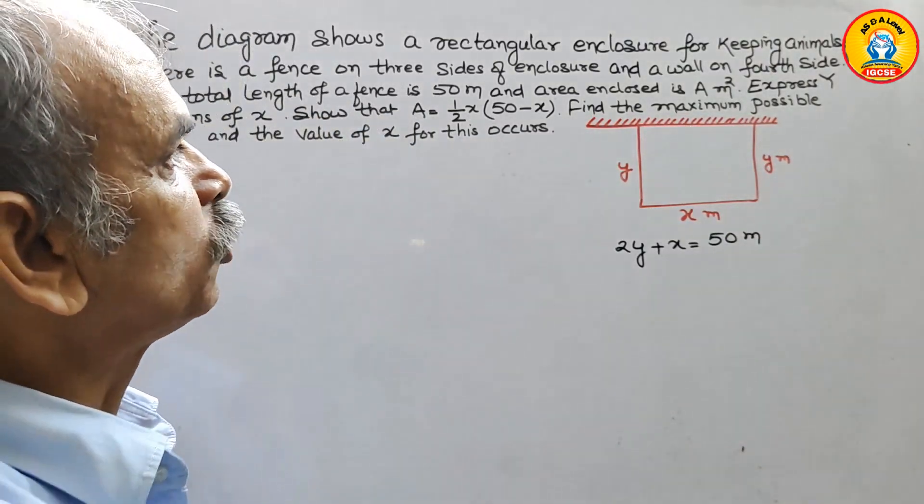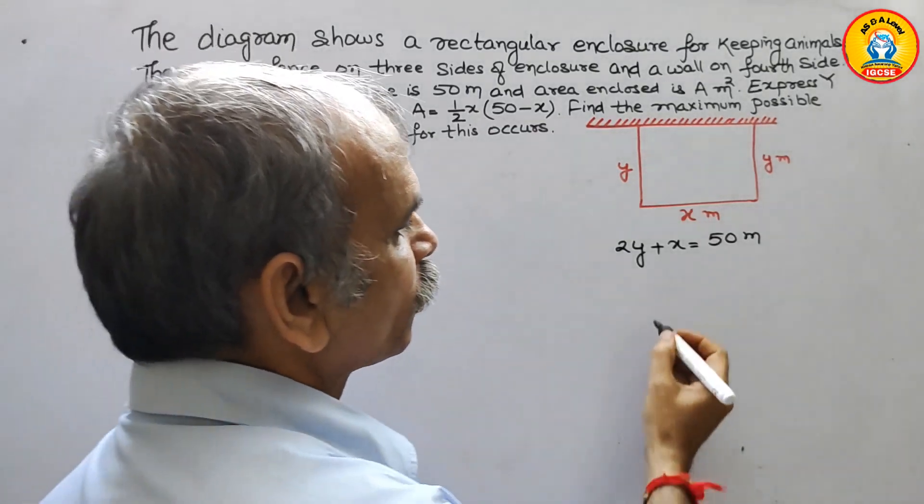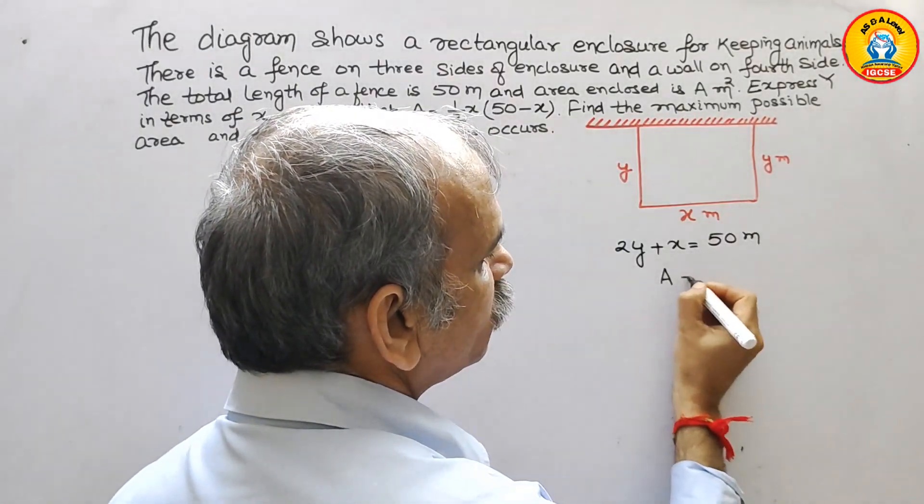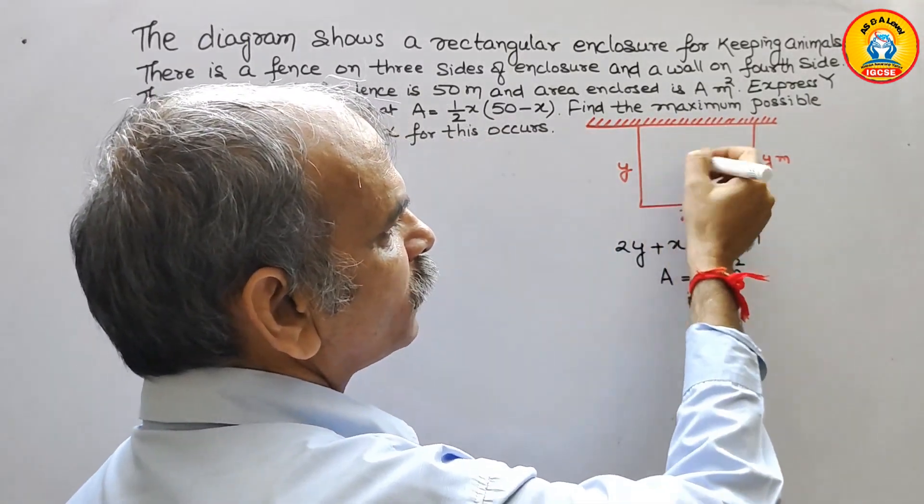Next they have told us the area is A meter square. Area is equal to A meter square, area of this.